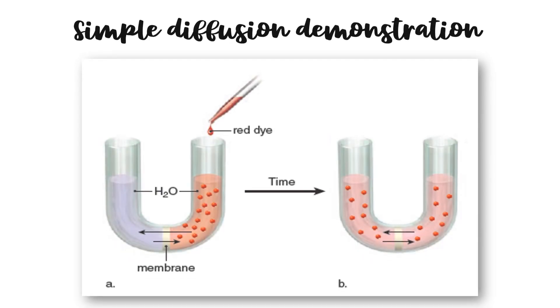Let's explore the first type of passive transport: diffusion. Diffusion is the movement of molecules from an area of higher concentration to an area of lower concentration. For example, when you apply cologne, the cologne molecules diffuse from you to your surroundings — this is why a friend across the room can smell your perfume. In the cell, non-polar molecules such as oxygen and carbon dioxide can directly pass through the double layer of hydrophobic tails, while small polar molecules like water can also cross the cell membrane directly. Simple diffusion is very spontaneous, occurs continuously, and no energy is required.